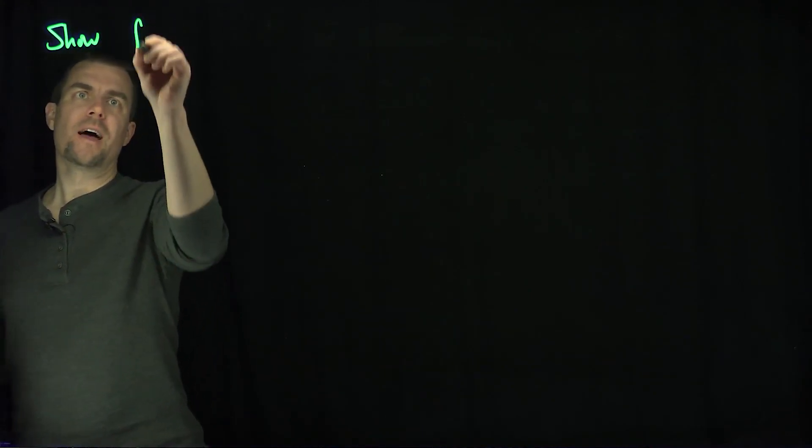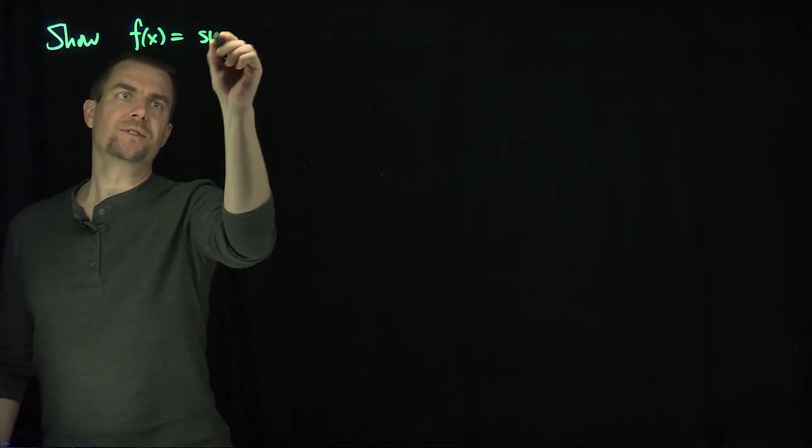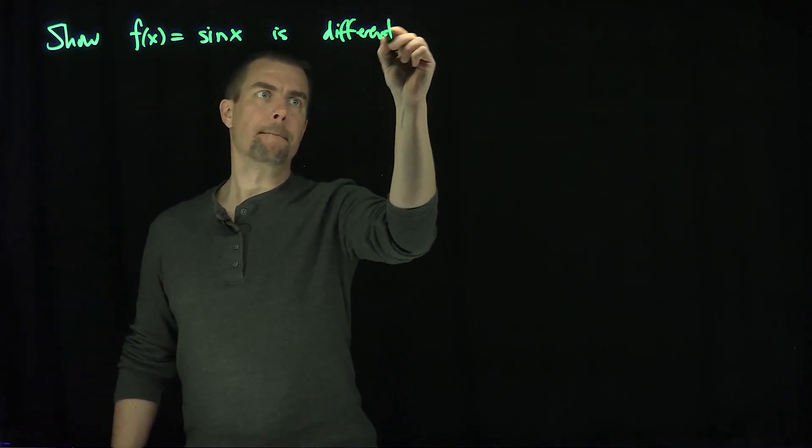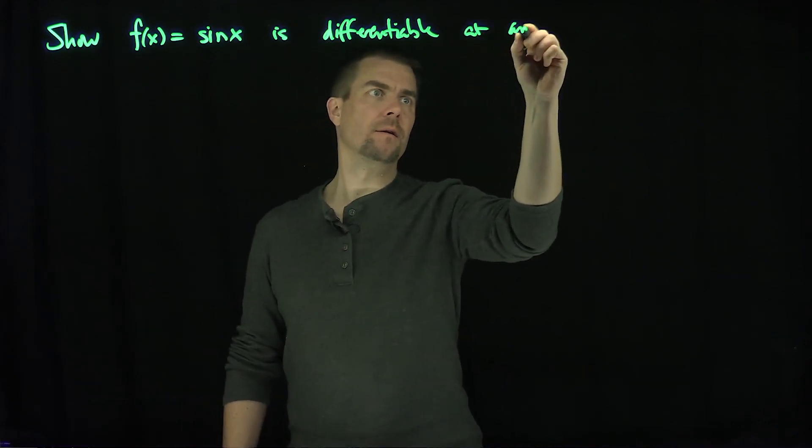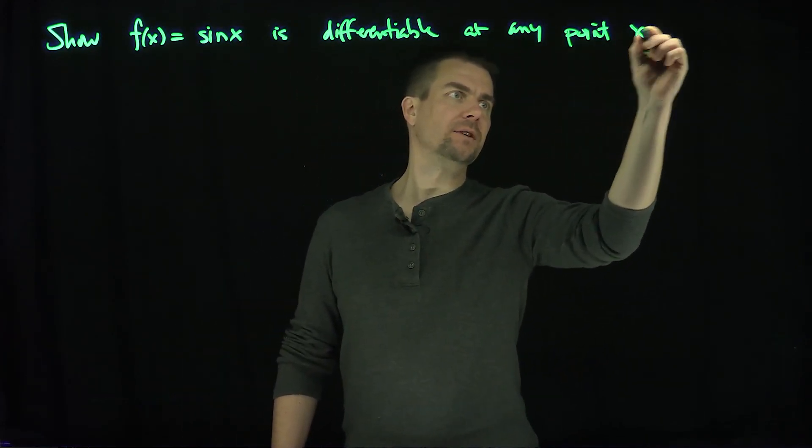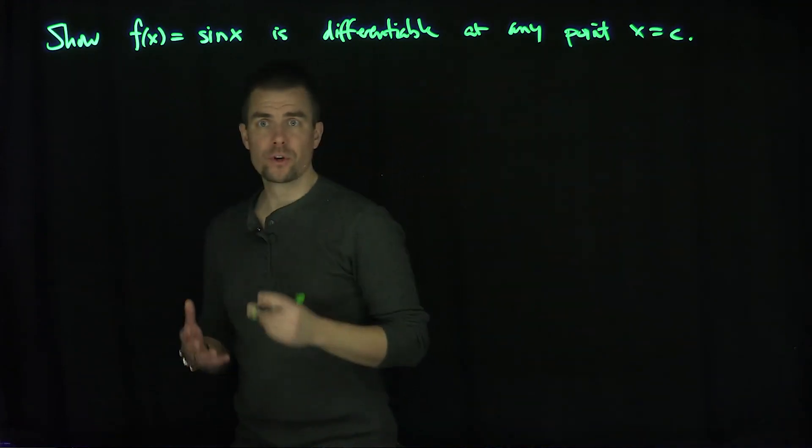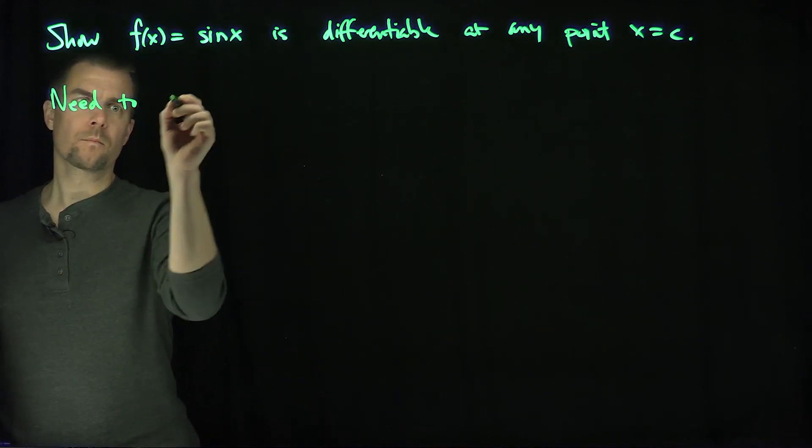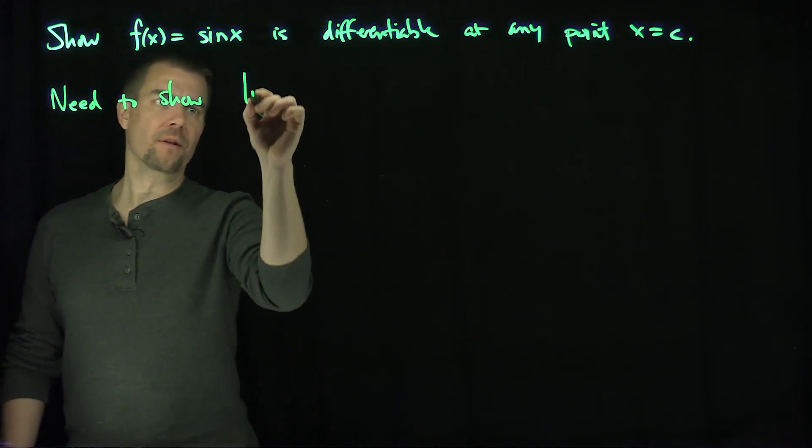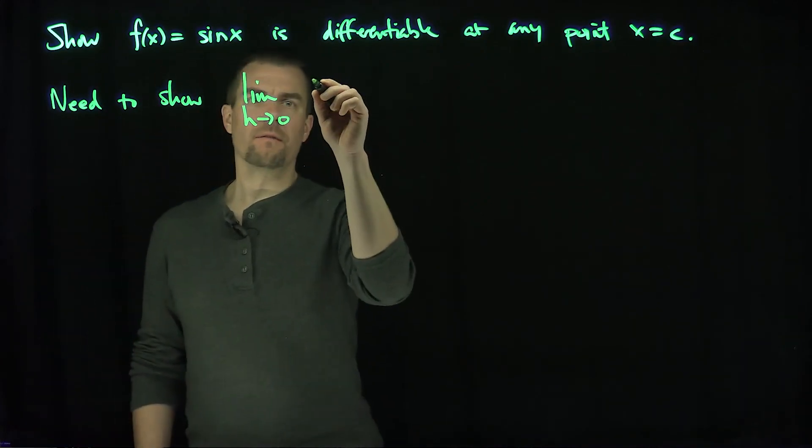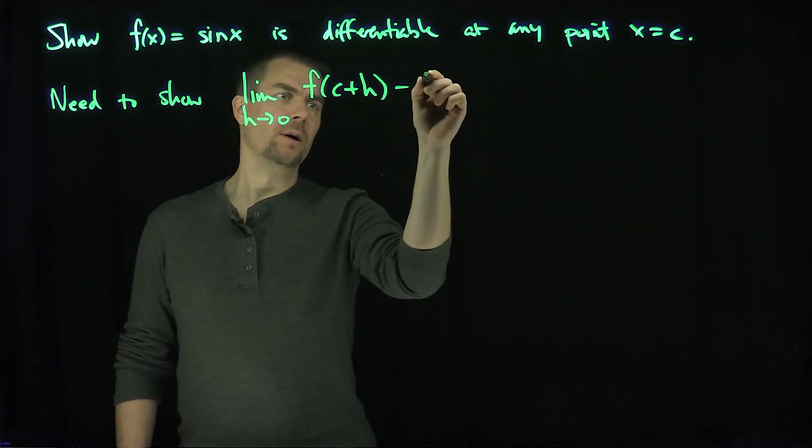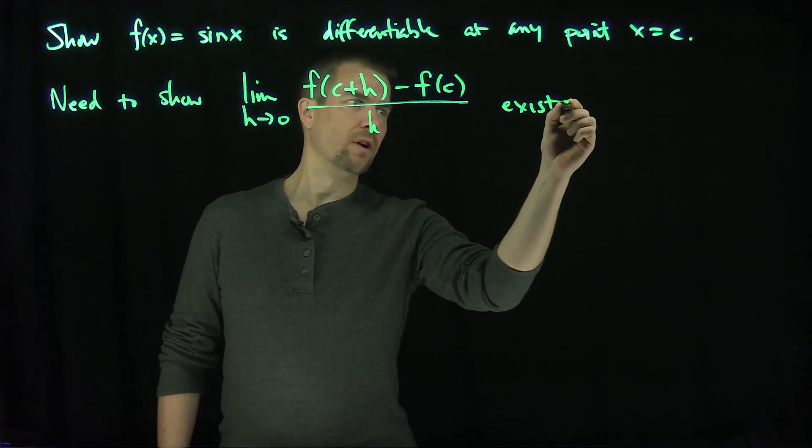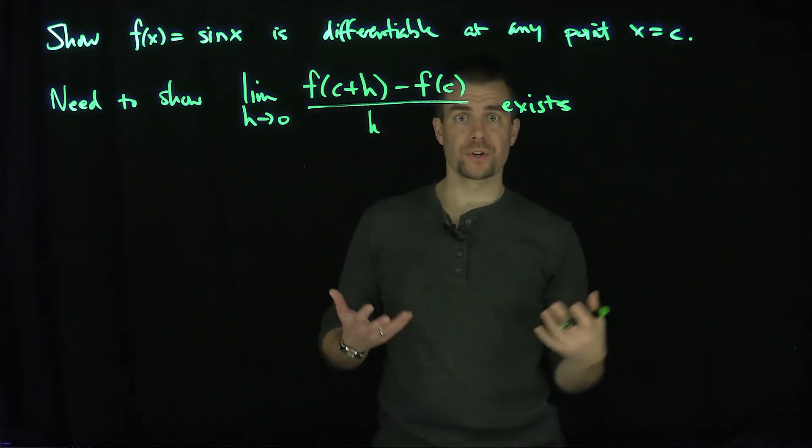Let's show that f of x, which is sine of x, is differentiable at any point x equals c. So what we'll do is show the difference quotient of this function exists. We need to show that the limit as h goes to zero of f of c plus h minus f of c divided by h exists.